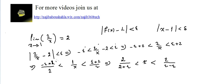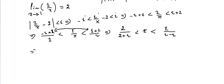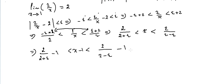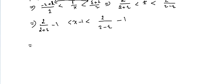When we take the reciprocal we flip the inequality because the numerator on one side is less than the numerator on the other. Now I have X, and I need X minus 1, since X approaches 1. Subtracting 1 from all sides: 2 over (2 plus epsilon) minus 1 less than X minus 1 less than 2 over (2 minus epsilon) minus 1.